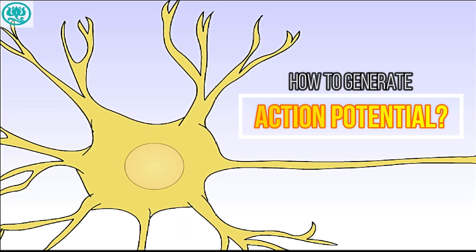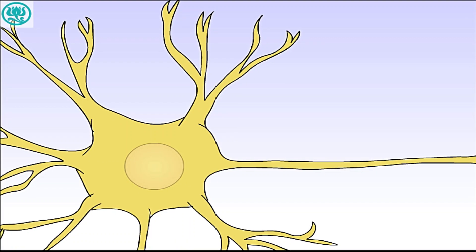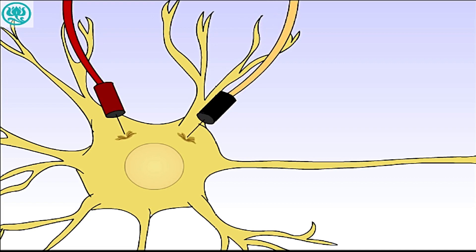In order to study how action potentials are generated, we will first insert two electrodes into the neuron, one to record the membrane voltage and another to inject current that can be used to push the membrane voltage toward more positive or depolarizing or more negative or hyperpolarizing voltages.